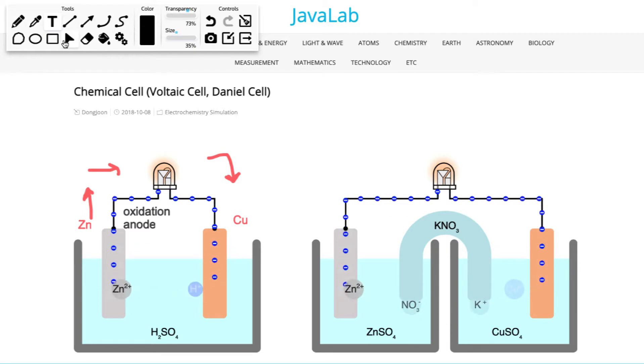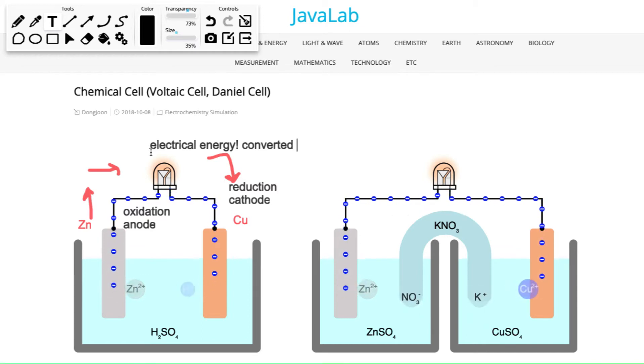Now over on the other side where copper is, I have electrons entering the metal. So this would be my reduction side or the cathode, red cat. So I've got zinc being oxidized, copper being reduced, and when we think about what's happening as the electrons travel through the wire we see that there's signs of electrical energy being released. So I can see the electrical energy being converted into other forms of energy and I can see signs of the energy transfer in the light.